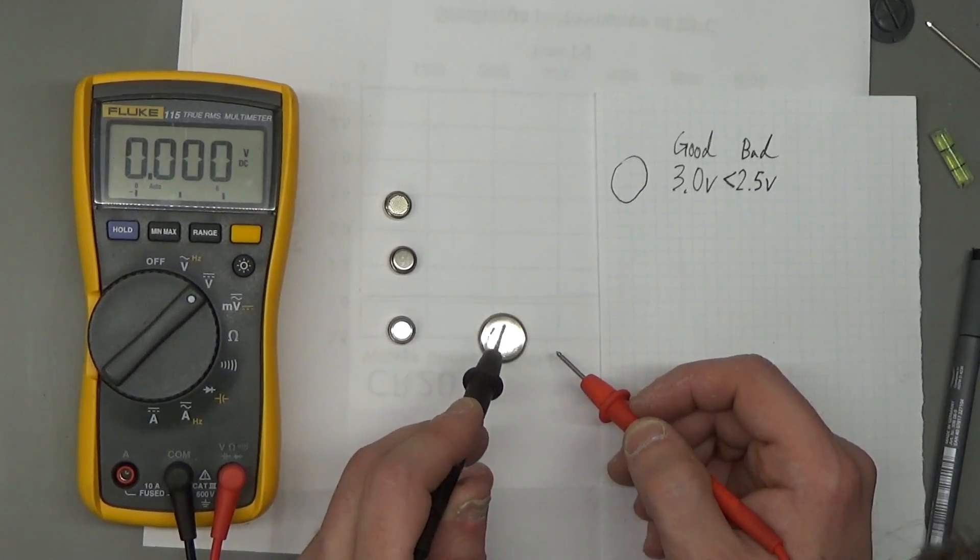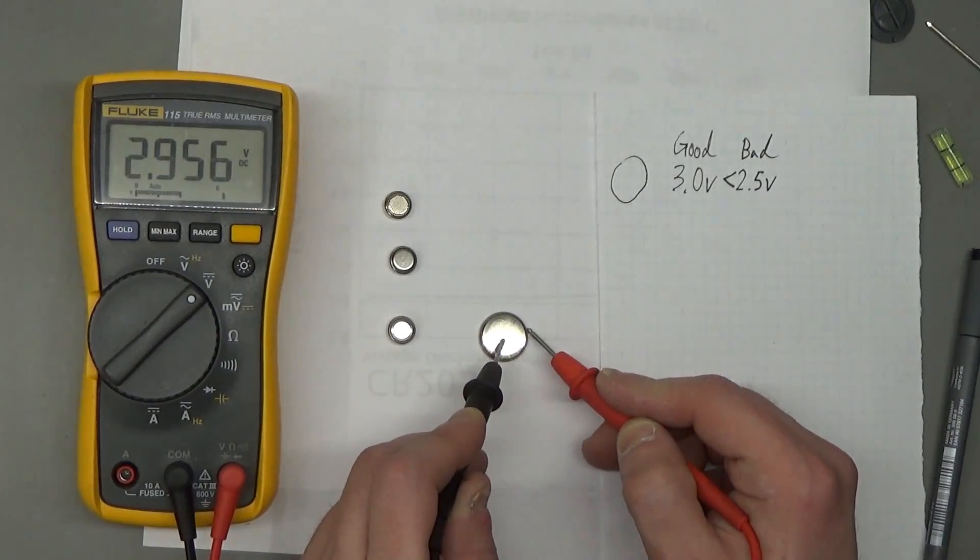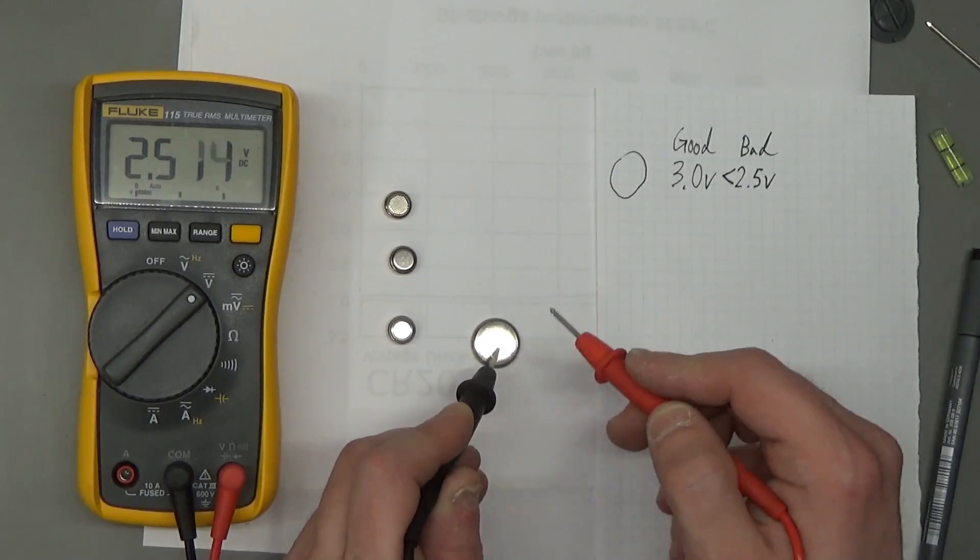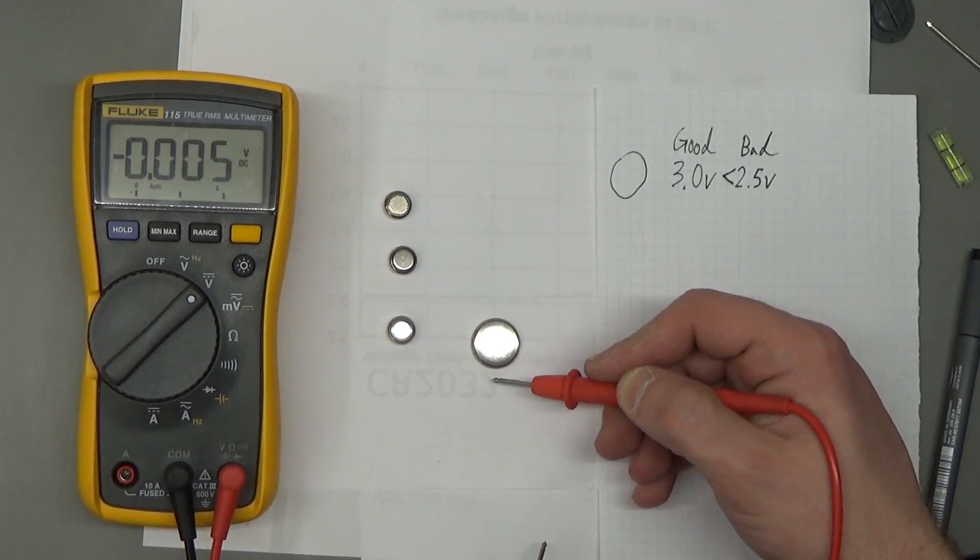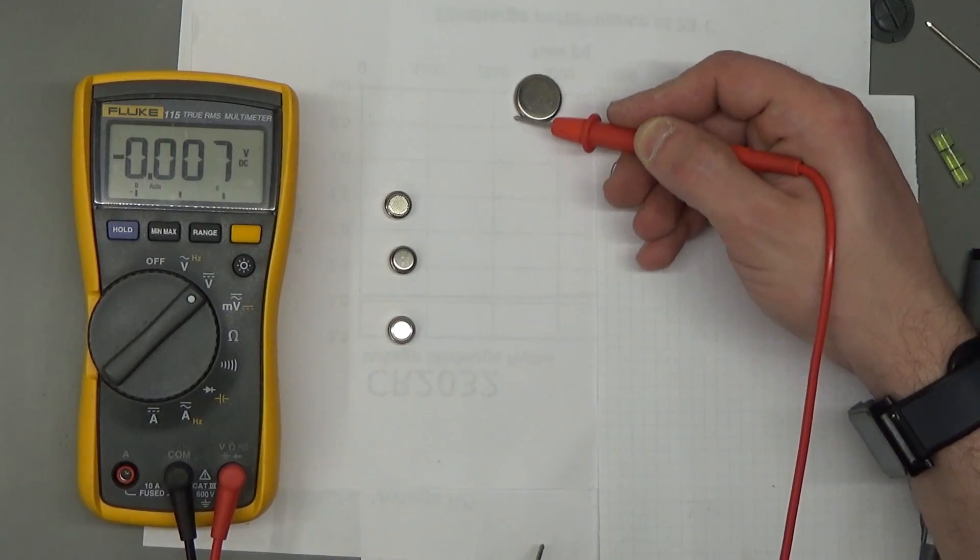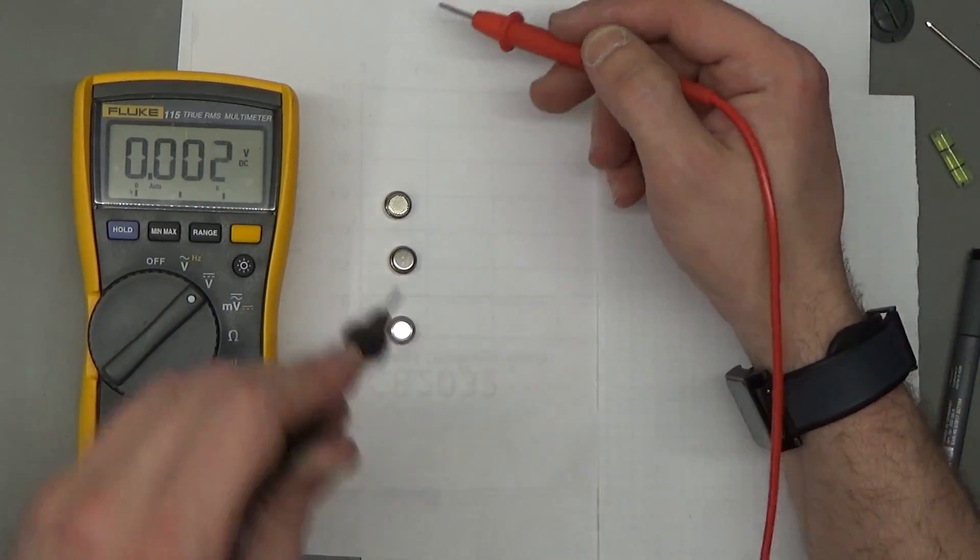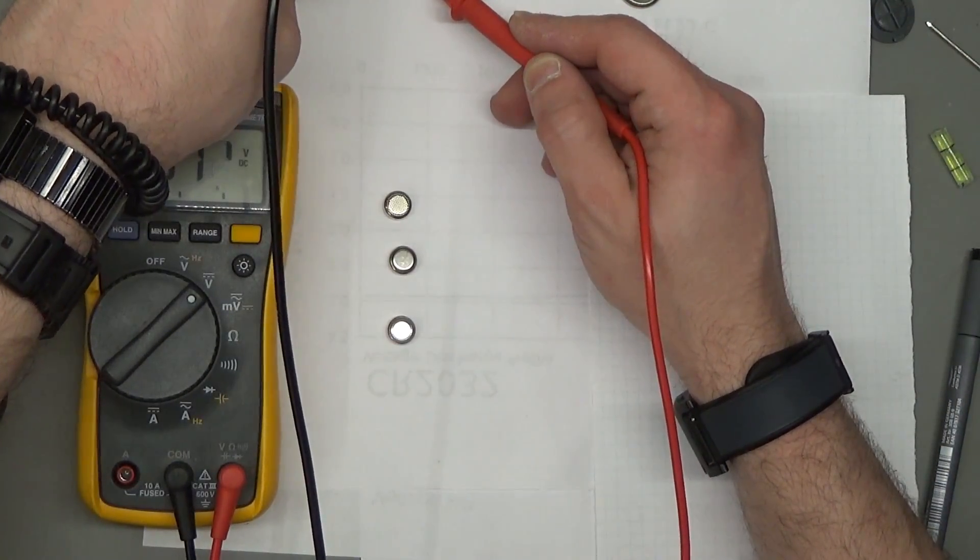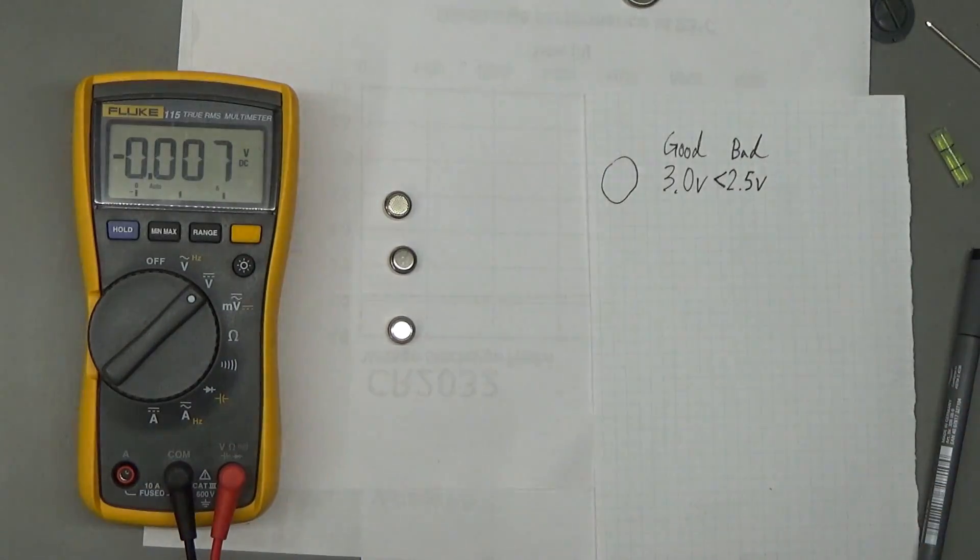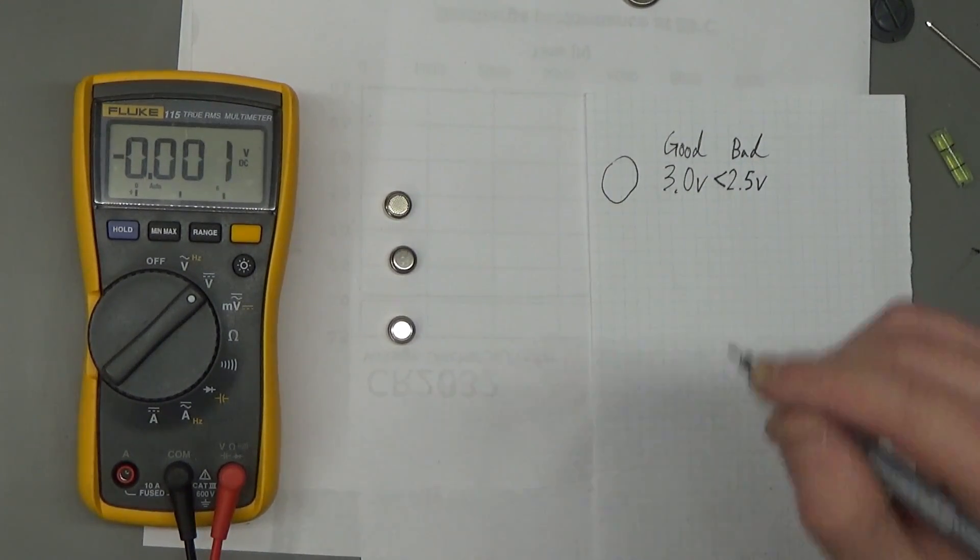And the last one here: black lead in the center, red lead on the side, and we're just under 3 volts, so that is a marginally good battery. So those are coin cells, and that's how you would go about testing to determine whether they're good or bad.